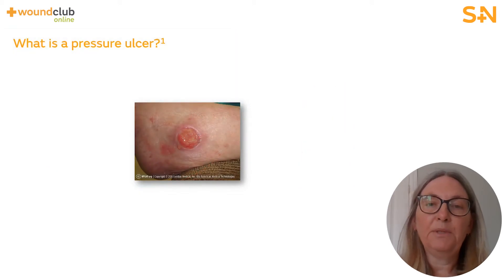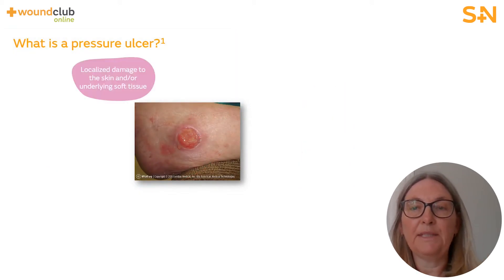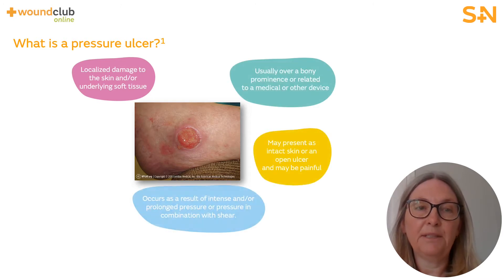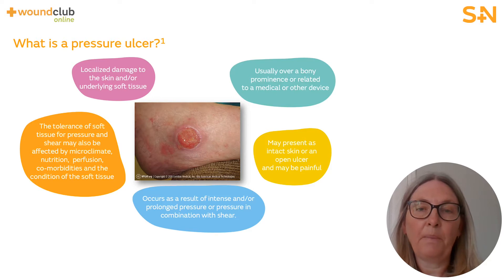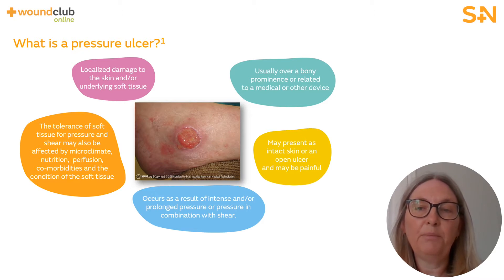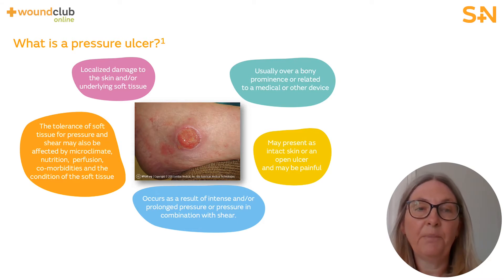It is important to understand what defines an injury or wound as pressure related, therefore correctly diagnosing a pressure ulcer. The cause of any wound is important in the assessment and appropriate planning to facilitate wound healing. Remember that if the wound is not caused by pressure it should not be documented as a pressure ulcer. A pressure ulcer is defined as localized damage to the skin and/or underlying tissue, usually over a bony prominence such as heels or elbows, as a result of intense or prolonged pressure, and can be in combination with a shearing force.